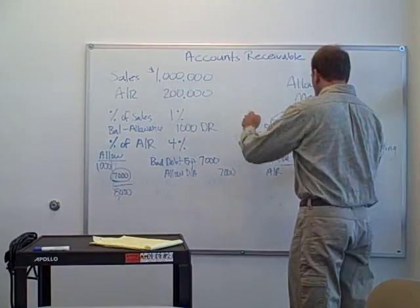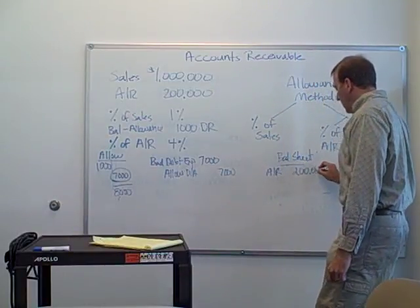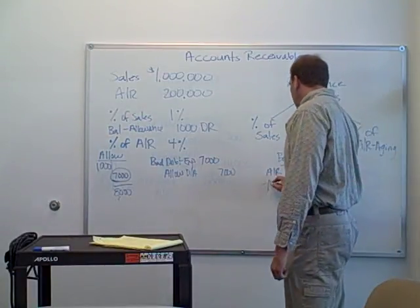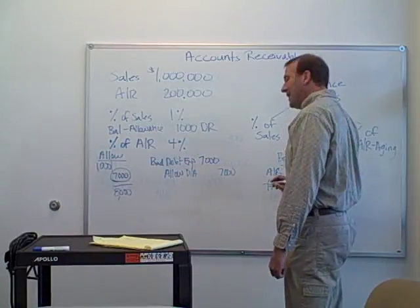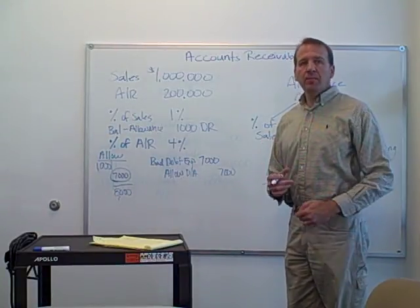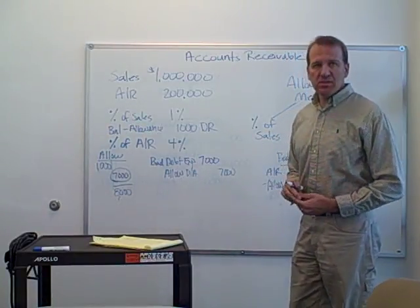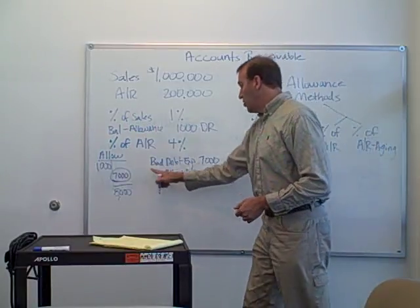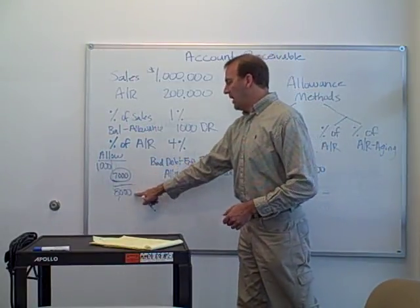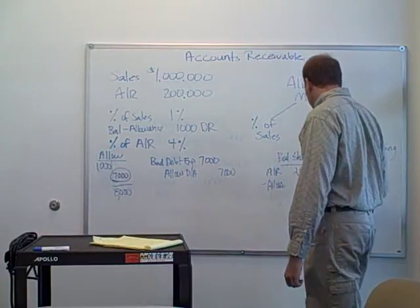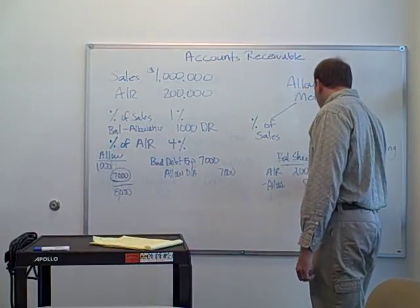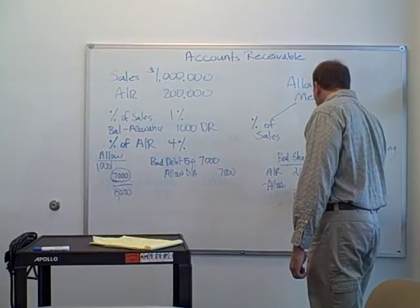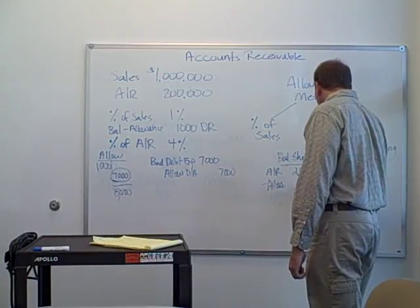Accounts receivable is $200,000 on our balance sheet, less our allowance — which is the money set aside for those customers that aren't going to pay us. We want the ending balance, $8,000, as our allowance. So our net accounts receivable ending balance is $192,000.